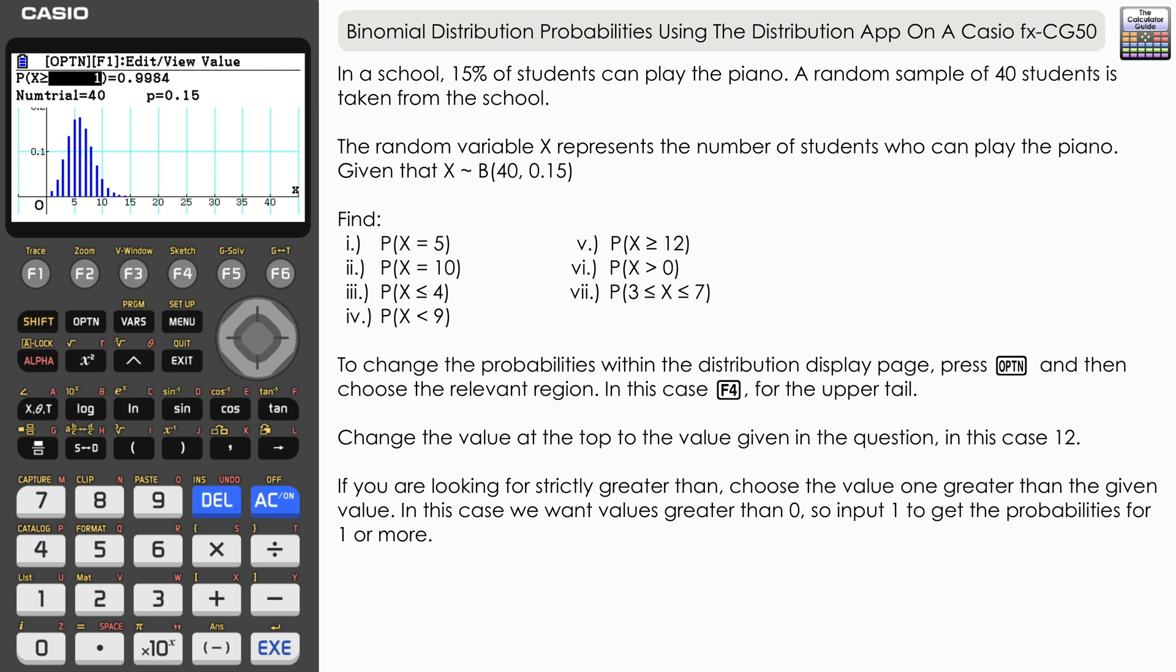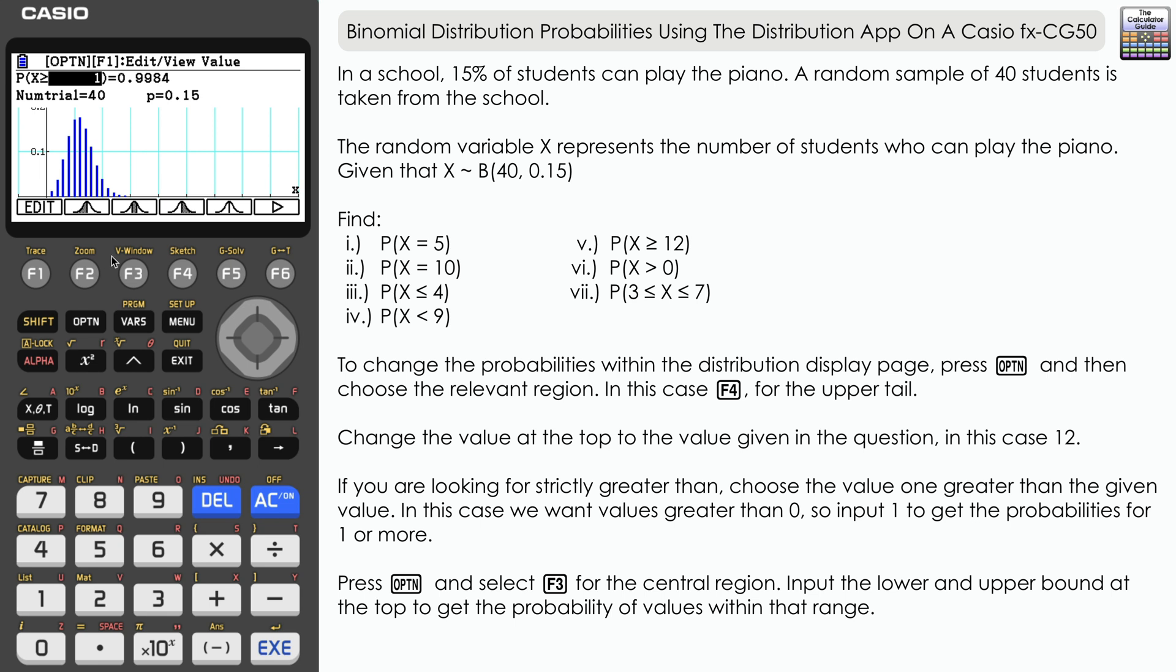Our last probability then is the probability that X is greater than or equal to 3 but less than or equal to 7. That is a region in the center of the distribution. So from here we just need to press option and F3, and you can see that we've got two entry points that we can input there, so a lower bound of 3 and an upper bound of 7.